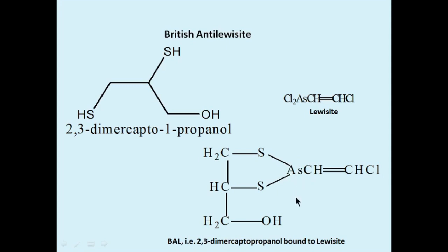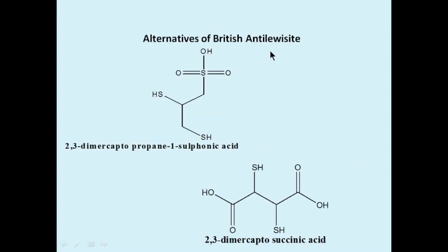BAL is also used against mercury, antimony, bismuth, copper, nickel, zinc, and gold. Essential metal ions may also become toxic if present above permissible limits. There have been reports of toxicity of BAL, so alternative compounds have also been used — namely, the sodium salt of 2,3-dimercaptopropane-1-sulfonic acid, and 2,3-dimercaptosuccinic acid (DMSA). These alternatives are used because they are more soluble and less toxic, and their sodium salt avoids the toxicity associated with British Anti-Lewisite.